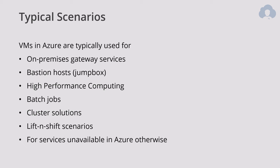There are many typical scenarios for using virtual machines, like on-premises gateway services, bastion hosts, high-performance computing, batch jobs, cluster solutions like HD Insights or Databricks, lift-and-shift scenarios where you're moving to the cloud without redesigning, or hosting a service unavailable as a cloud platform service — for instance, in the case of ETL, this could be Airflow. There are many scenarios where you still want to use virtual machines, but if a platform-as-a-service equivalent is available in Azure, try to use that instead.